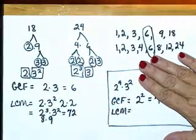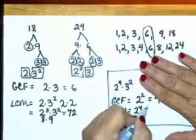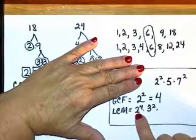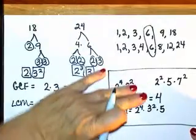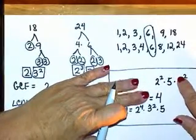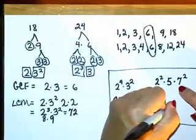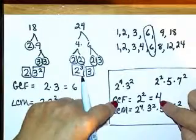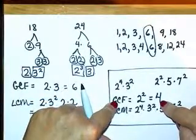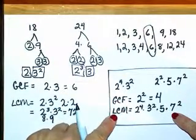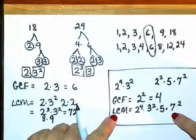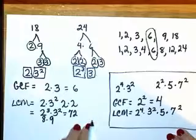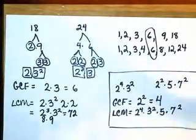For another LCM example: we need 2 to the 4th, 3 squared from the first number. From the second, 2 squared is already covered; we also need a 5 and a 7 squared since those aren't represented yet. The strategy is: to find the GCF, look for factors that are the same and pick the smallest power. For the LCM, write down everything represented in both and pick the largest power. So the least gets the largest power, and the greatest gets the smallest power — just the opposite of what you might expect.